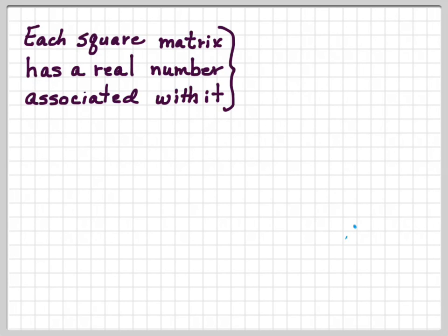A square matrix is a 2 by 2, or a 3 by 3, or a 4 by 4, or any matrix that has the same number of rows and columns.